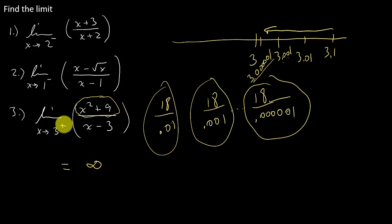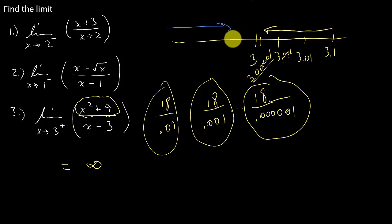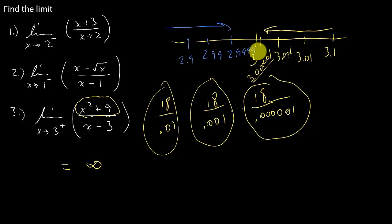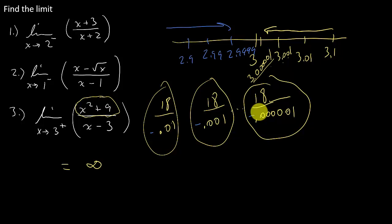You would have the same argument if you were coming in to 3 from the left, with numbers like 2.9, 2.99, 2.9999, and so on. The numerator is still going to stay around 18. But what's going to happen in the denominator? These values are going to be negative. So that means this limit would be going to negative infinity.